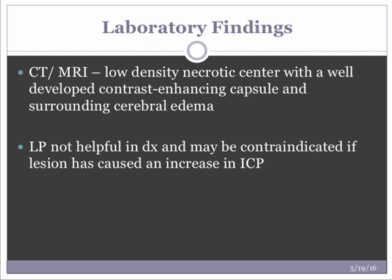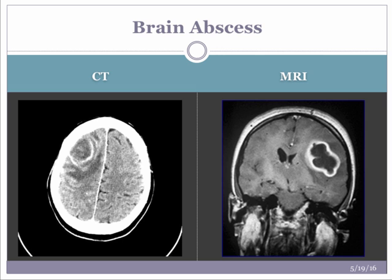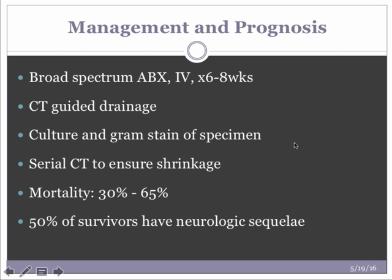Eventually, death can occur as a result of brain herniation from the expanding mass. CT and MRI will show a low-density necrotic center with well-developed contrast-enhancing borders and surrounding cerebral edema. Lumbar puncture is not helpful and may be contraindicated if the lesion is large, as it might precipitate brain herniation and death. CT scan shows a ring-enhancing lesion, and MRI provides even clearer visualization.